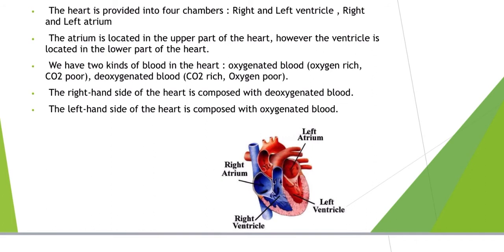The right-hand side of the heart is composed with deoxygenated blood, and the left-hand side of the heart is composed with oxygenated blood — oxygen-rich and carbon dioxide-poor, as you can see in the picture. The atria are located in the upper part of the heart, and the ventricles are located in the lower part of the heart.